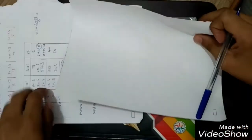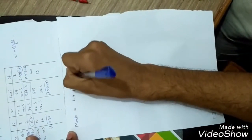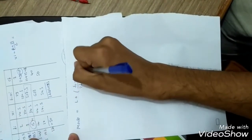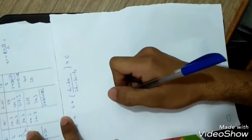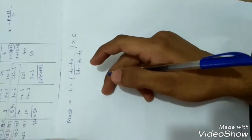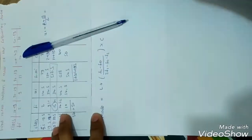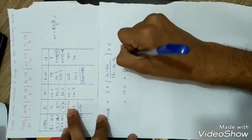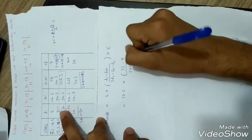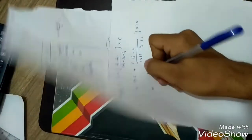Now we find the mode. The equation is: L plus (F1 minus F0) divided by (2F1 minus F0 minus F2), multiplied by C. F1 is the frequency of the modal class, F0 is the frequency of the preceding class, and F2 is the frequency of the succeeding class. So: L equals 29.5, F1 equals 15, F0 equals 9, F2 equals 14, and C equals 10. Mode equals 29.5 plus (15 minus 9) divided by (2 times 15 minus 9 minus 14), multiplied by 10, giving approximately 38.07.